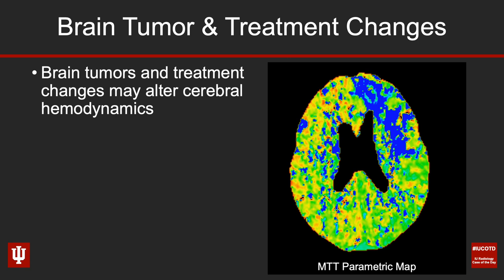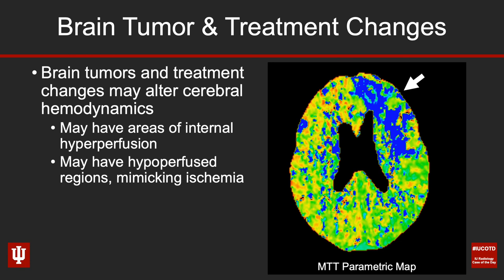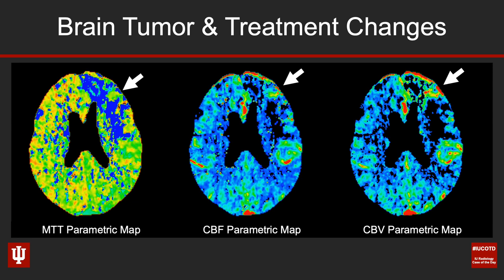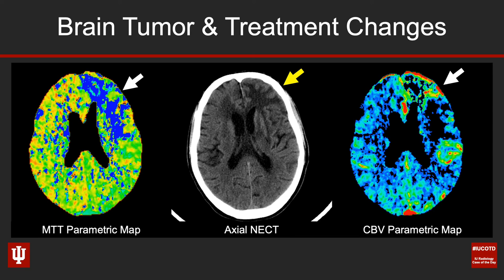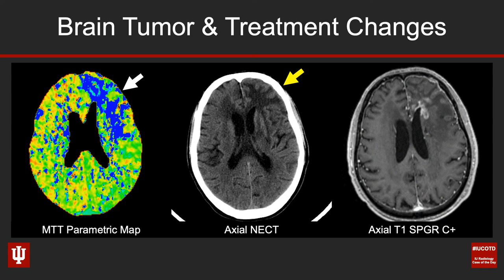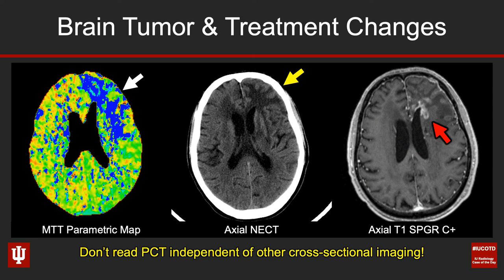Don't forget about brain tumors and treatment-related changes, which can be associated with altered cerebral hemodynamics. There may be internal areas of hyperperfusion surrounded by regions of general hypoperfusion. In this patient, we see a general region of relative hypoperfusion in the left frontal lobe, but some internal areas — right where the white arrow is pointing — have some increased perfusion. The non-contrast CT shows confluent hypoattenuation in the left frontal lobe, and the contrast-enhanced MRI shows nodular enhancement corresponding with the areas of increased perfusion. The take-home point is don't read the perfusion CT independent of your other cross-sectional imaging.